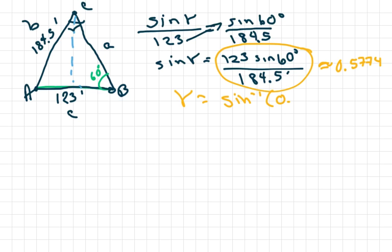So gamma is going to equal the inverse sine of that, 0.5774. So gamma equals approximately 35.3 degrees.